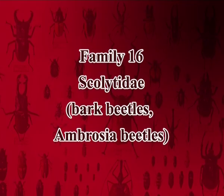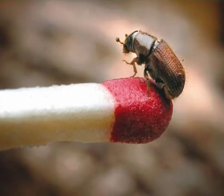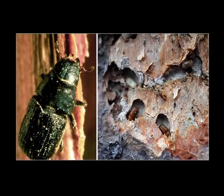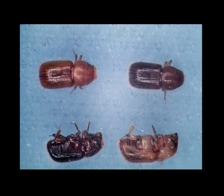Sixteenth family is Scolytidae or bark beetles or ambrosia beetles. They are elongate, cylindrical; head is visible dorsally or concealed. Tarsi are short, first segment is not elongate. The antennae are usually elbowed and clubbed. They are brownish to black, small beetles causing shot holes on the shoots of plants. Legless larvae feed on the ambrosia fungi cultivated by the adults in the galleries. Example: Xylosandrus morigerus, the coffee shot hole borer.